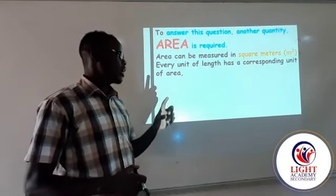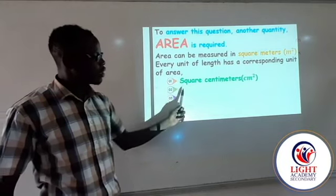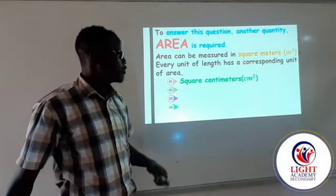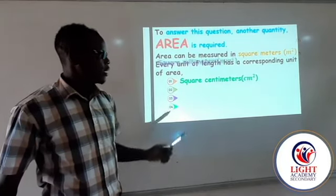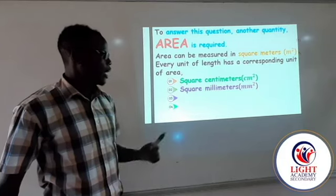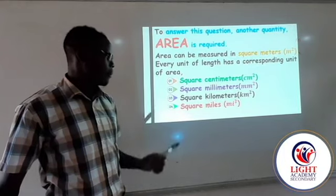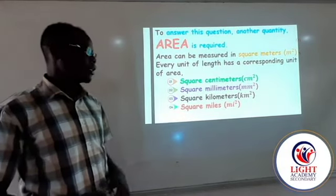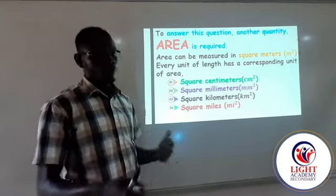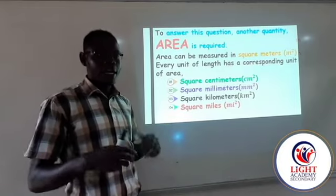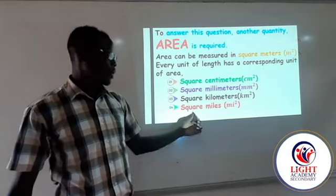Every unit of length has a corresponding unit of area. These are some of the corresponding units of area: the first is the square centimeter (cm²), then square millimeter, square kilometer, and square mile length — this last one is mainly used by quantity surveyors trying to find out how big a chunk of land is.